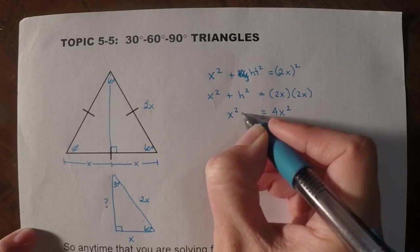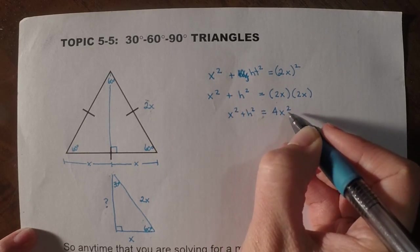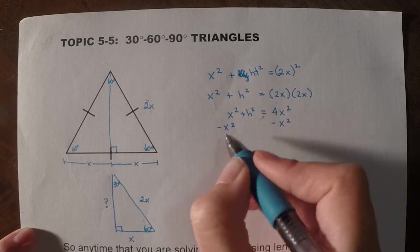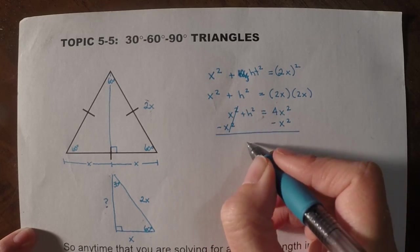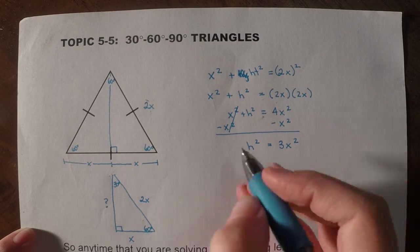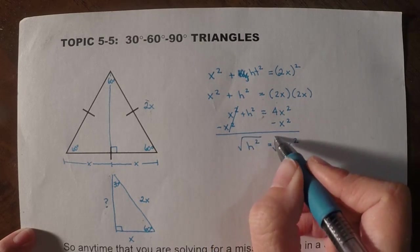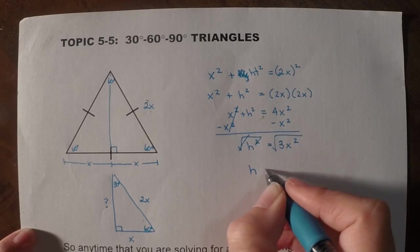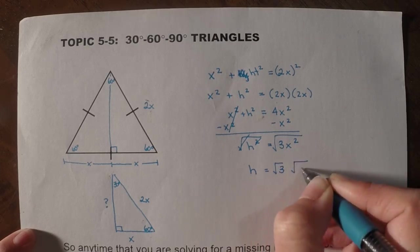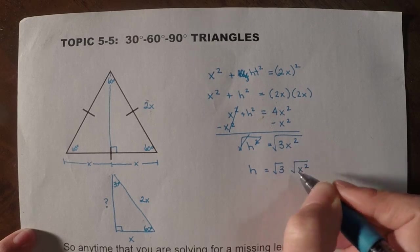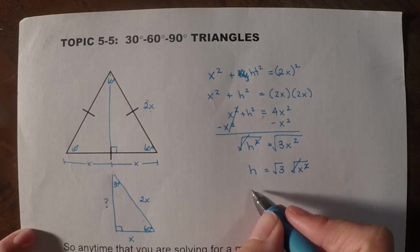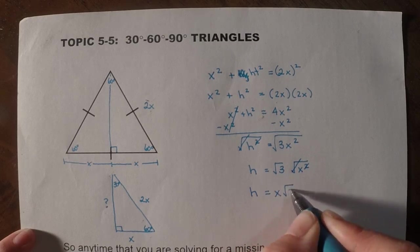So now I have x squared plus h squared equals 4x squared. So now if I put these together, I'm going to subtract x squared. So then 4x squared minus x squared, I've got h squared equals 3x squared. So now if I take the square root to get rid of the square, I have that the height would be this, and I'm assuming everyone's okay with me separating it, so it would be root 3 times root x squared. So then the square would cancel with the square root, and I now have that h would equal x root 3.